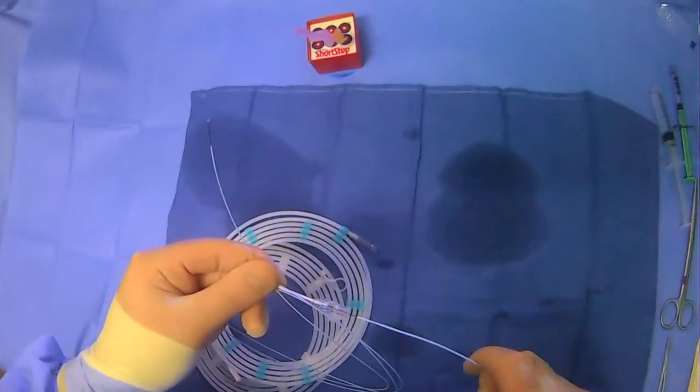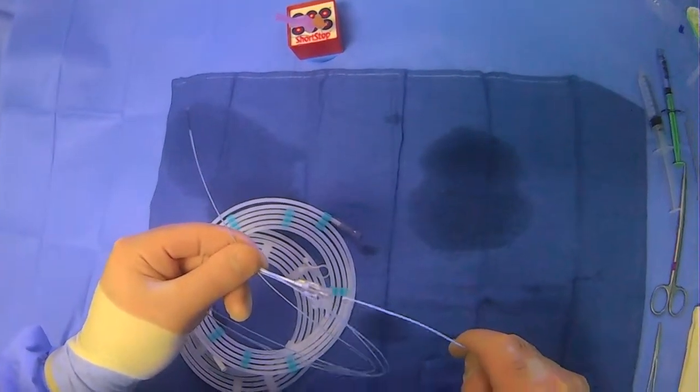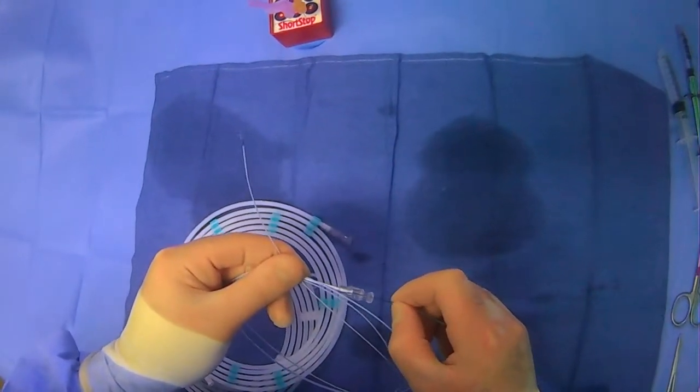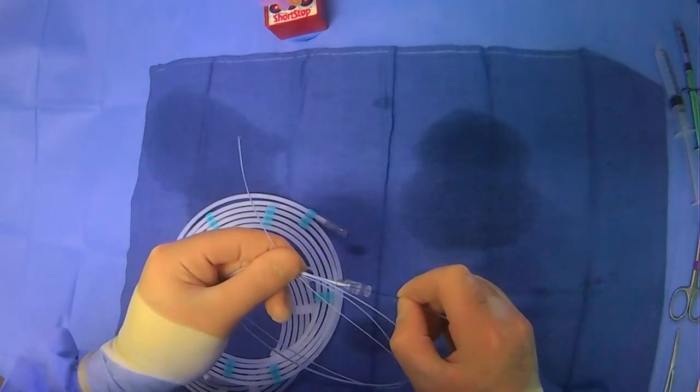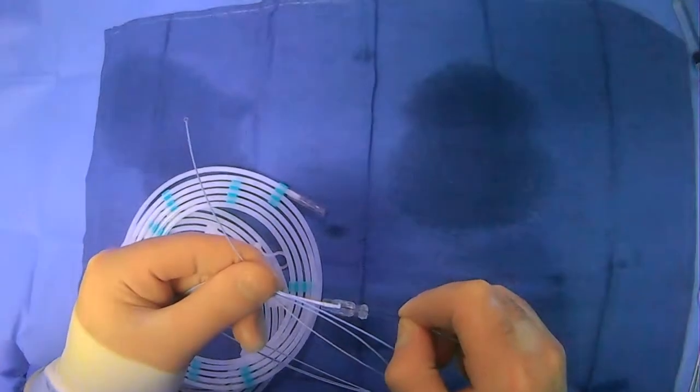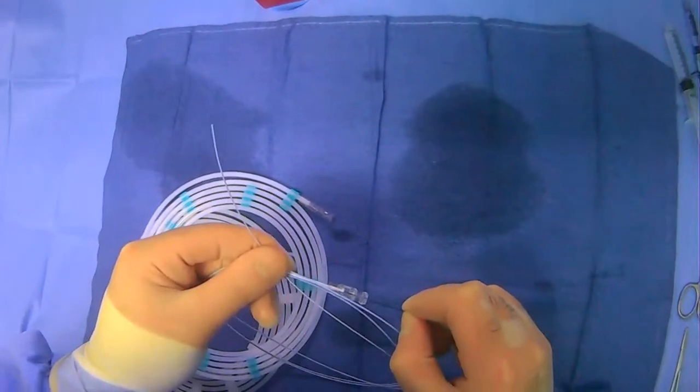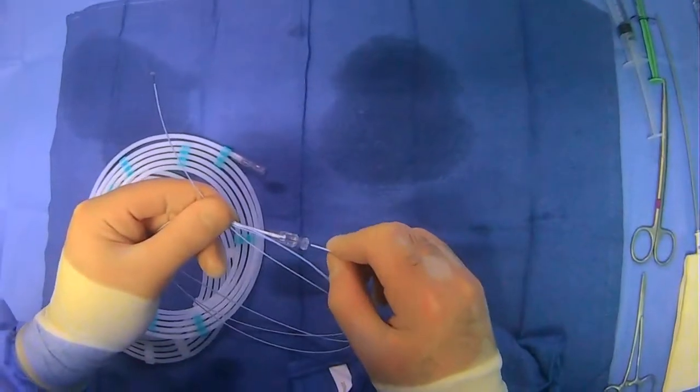So it gets a little tough with the microcatheter, but you basically are just pulling and pushing to bring the snare in and out of the microcatheter here and to actually snare something. And that's the basics of how this works.